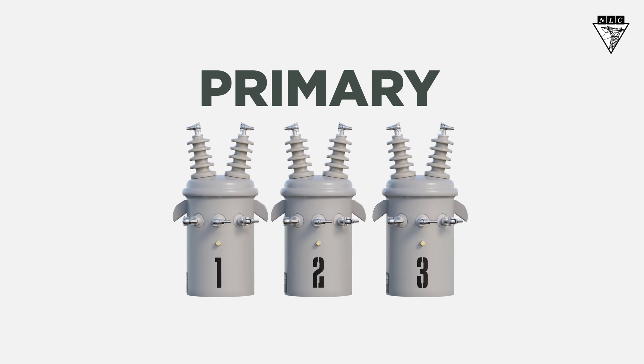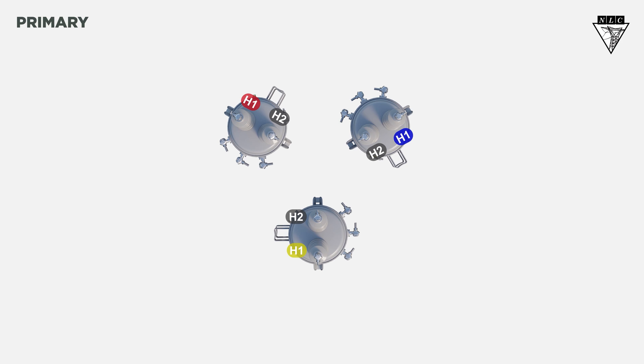We'll begin on the primary side. Start by connecting the H2 bushings together. Next, connect the jumpers from each H1 bushing to the phases.